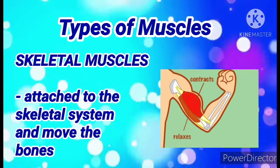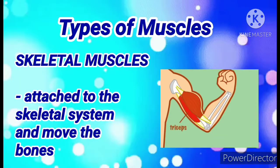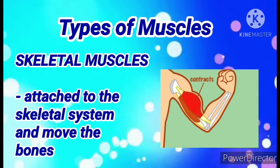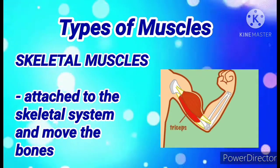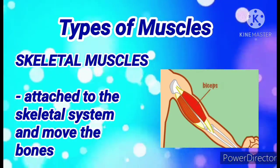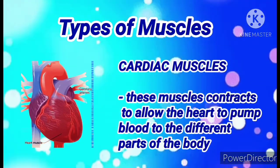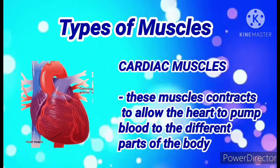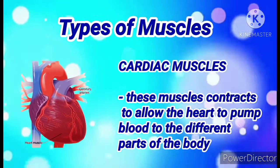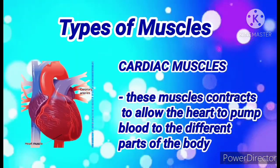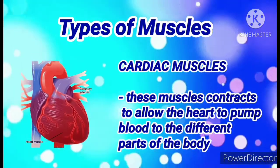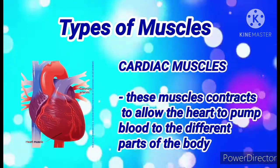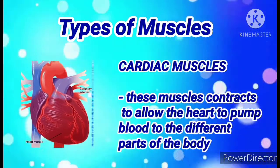There are three types of muscles, among which is the skeletal muscles. Skeletal muscles are attached to the skeletal system to move the bones, and they are also called voluntary muscles, meaning we can control their movement. Cardiac muscles are muscles found only in the heart. These muscles contract to allow the heart to pump blood to the different parts of our body, and they are considered involuntary muscles because we cannot control the movement of our heart.